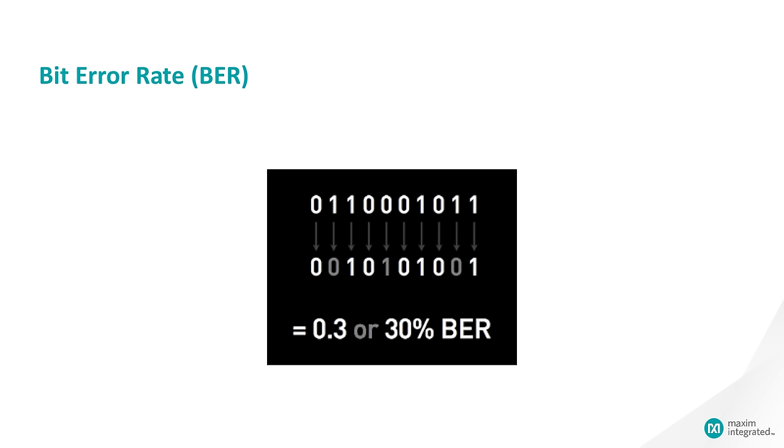A bit error occurs when a transmitted bit is corrupted at some point in the communication chain. This could be due to noise, interference, distortion, or data synchronization errors. The rate at which these errors occur can be quantified and is expressed as the bit error rate, or BER. BER is the number of bit errors divided by the total number of bits transferred. BER does not have any units associated with it and is often expressed as a percentage. A lower BER number, or percentage, indicates a more reliable communications channel.